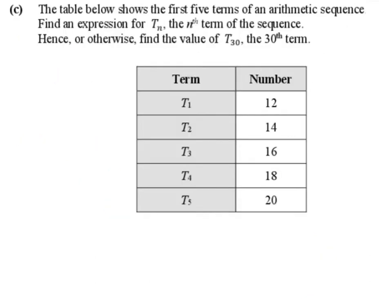Part C. The table below shows the first five terms of an arithmetic sequence. Find an expression for tₙ, the nth term of the sequence. Hence or otherwise, find the value of t₃₀, the 30th term.